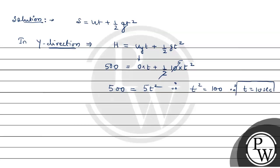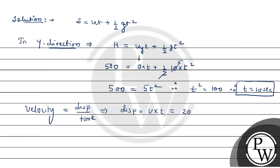Now we calculate velocity and displacement. Displacement equals velocity multiplied by time. Velocity given is 20 m/s and time calculated is 10 seconds, so displacement equals 200 meters.